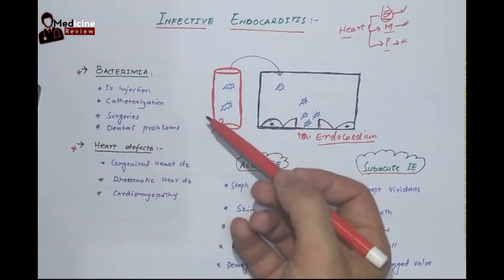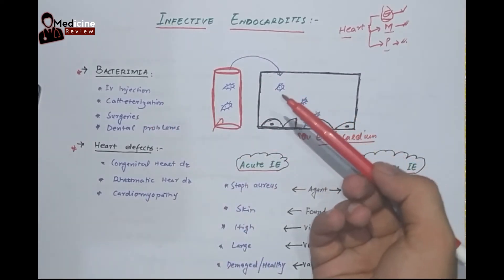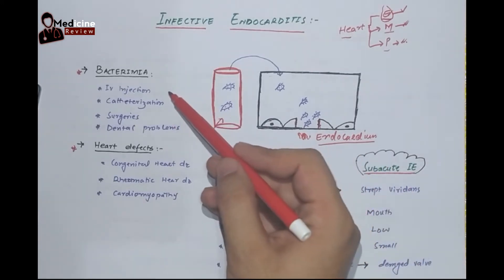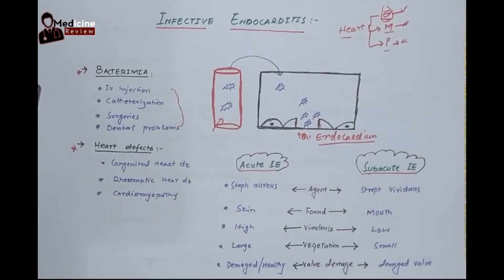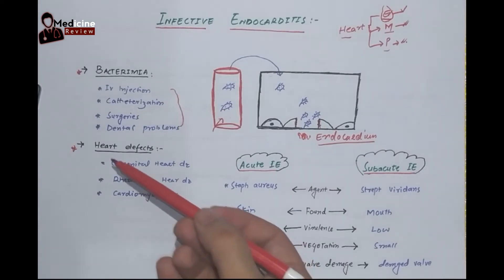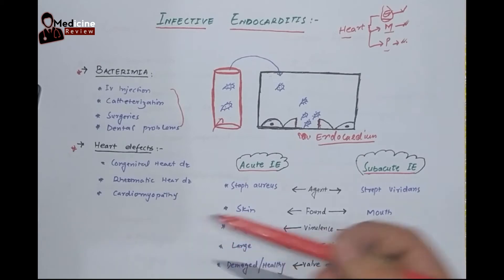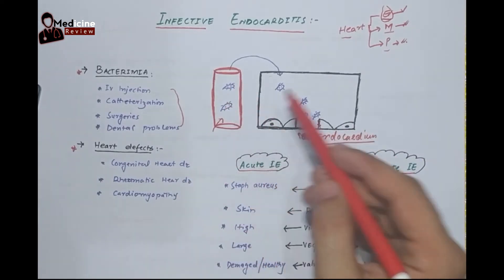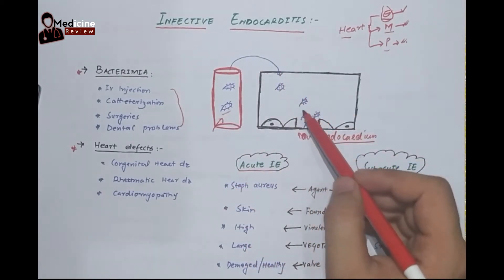Bacteremia can occur due to IV injections, IV catheterizations, direct surgeries, or dental problems like dental caries. Through these routes, bacteria can enter the bloodstream. If on top of this bacteremia there is a heart defect — like congenital heart disease, rheumatic heart disease, cardiomyopathies, hypertensive cardiomyopathies, or MI — these bacteria travel to the heart via circulation.